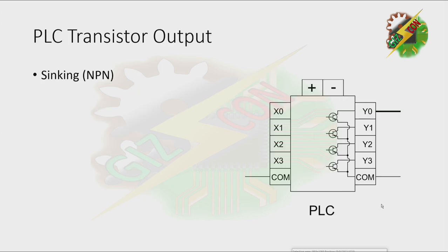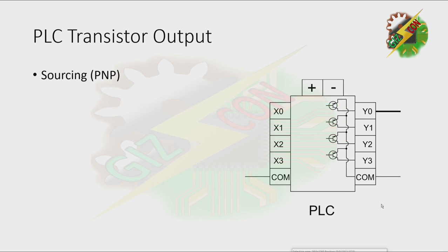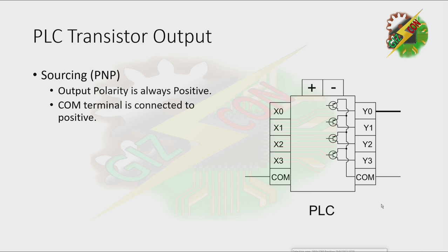Now let's discuss transistor output. For NPN or sinking output, the polarity is always negative — the common terminal is connected to negative, so we have a negative command. When the transistor is activated, the current will enter the collector and exit through the emitter, making our output negative. For PNP or sourcing output, the polarity is always positive — the common terminal is connected to positive, giving us a positive command.